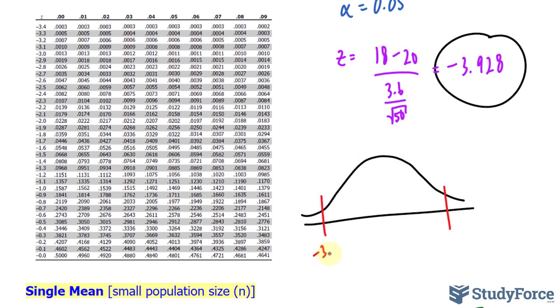So, we have this tail end and this tail end, where this tail represents negative 3.928, and this one represents positive 3.928, and in the middle, zero. This will serve as our rejection region.